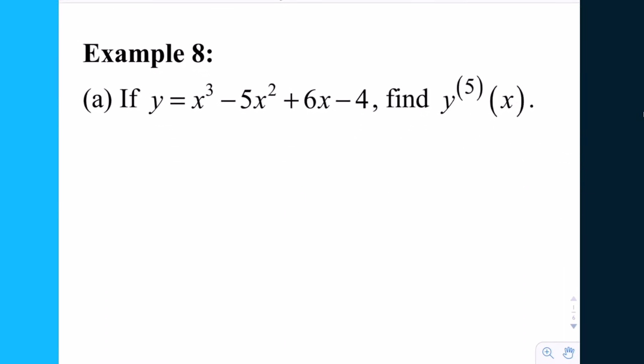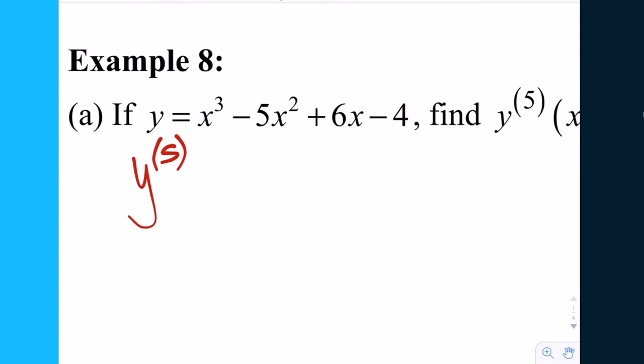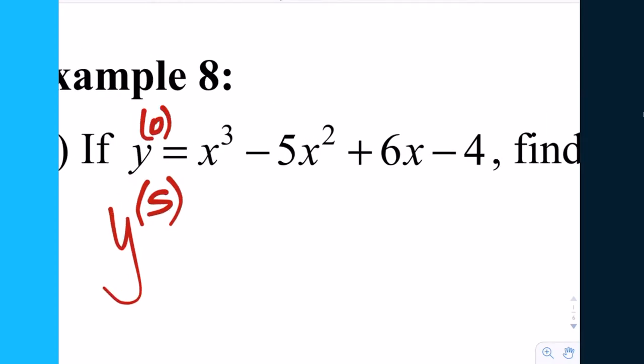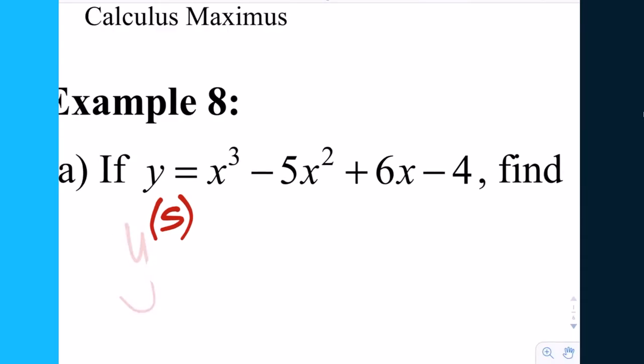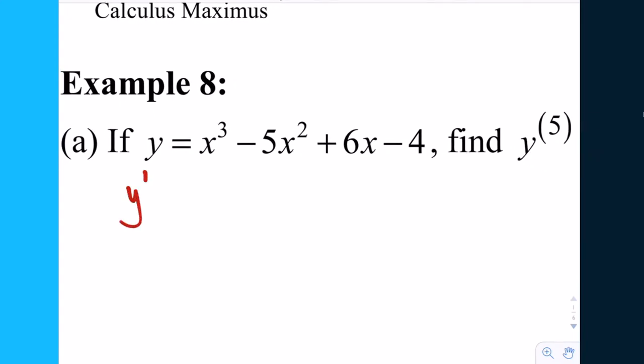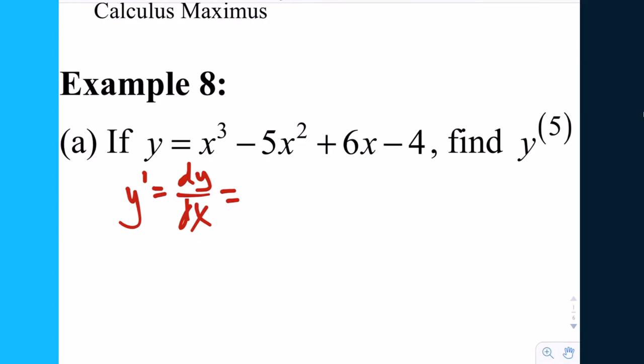Okay, so let's try it out. Example eight. If y equals that cubic polynomial, find this. What does that mean? The fifth derivative. Is there a way to go straight to the fifth derivative from the original function? Not necessarily. Typically, it's a recursive operation, which means you have to have the previous to get the subsequent. So I have to go straight from y to y prime. None of the terms on the right need a rewriting. So what becomes of the first term? 3x squared minus 10x plus 6. So the derivative of a cubic is a quadratic. Every time you take the derivative, you lose one degree unit.